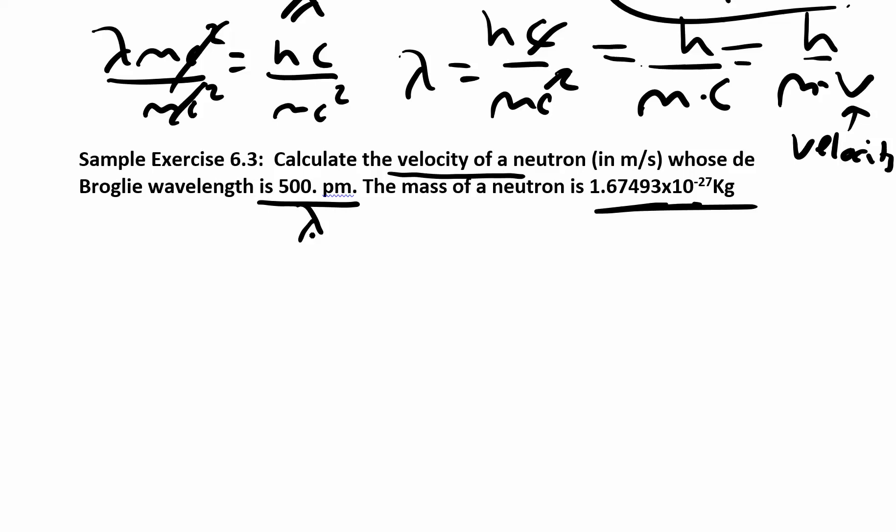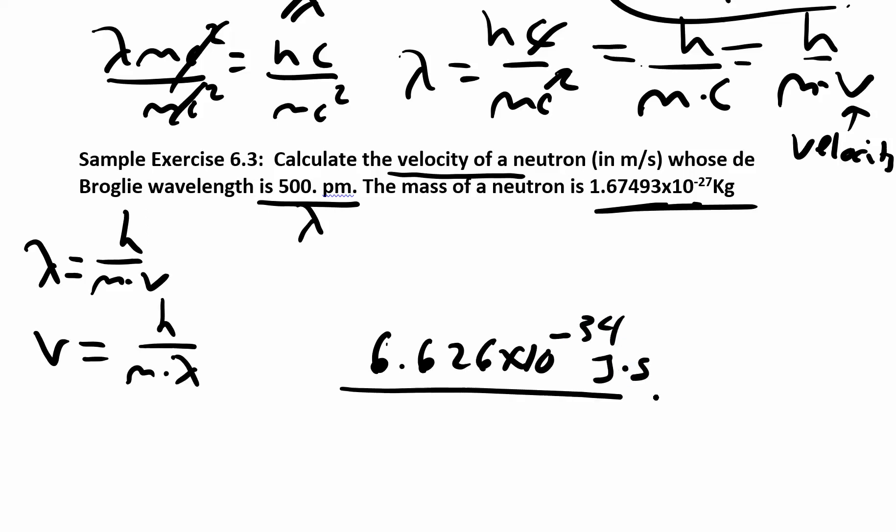Lambda is h over m times v. I'm looking for v. So I can rearrange this equation to v is h over m times lambda. I just multiply both sides by v, divide by the lambda. I know what h is. H is the 6.626 times 10 to the negative 34 joules times seconds. Mass, you want to keep in kilograms. Keep mass in kilograms, and I'll show you why.